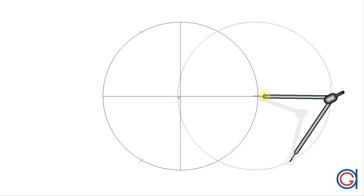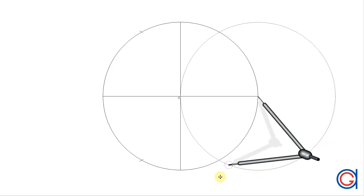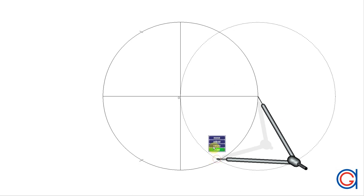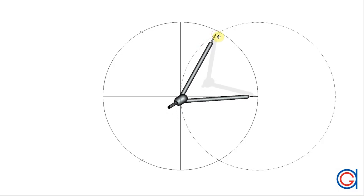Now repeating this process, setting our compass on the other side of the horizontal diameter, we scribe two more arcs, cutting our circumference below and above the diameter, as can be seen here.